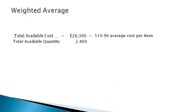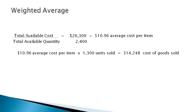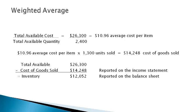Under the weighted average method, the average of all available units is used to value inventory sold and inventory on hand at the end of the period. The total available cost is divided by the total available quantity to get an average cost of each item. The average cost is multiplied by the quantity of units sold to get the cost of goods sold. This is subtracted from the total available to get the value of inventory that remains in the warehouse at the end of the period.